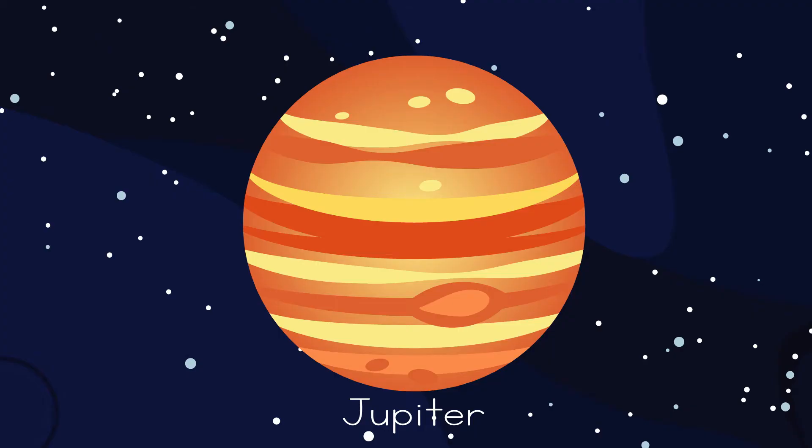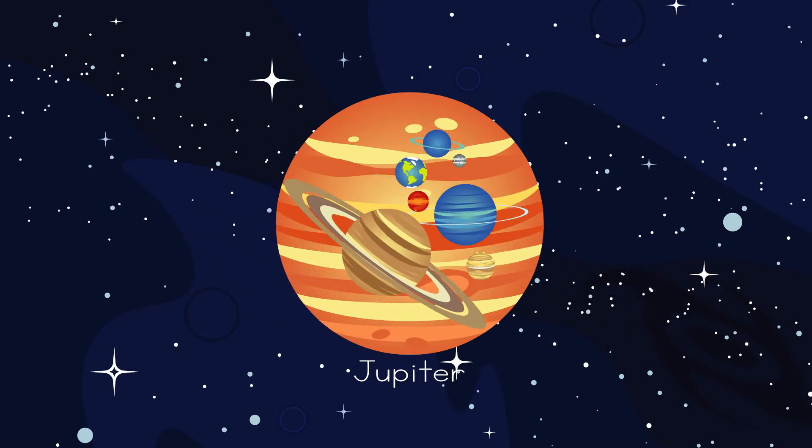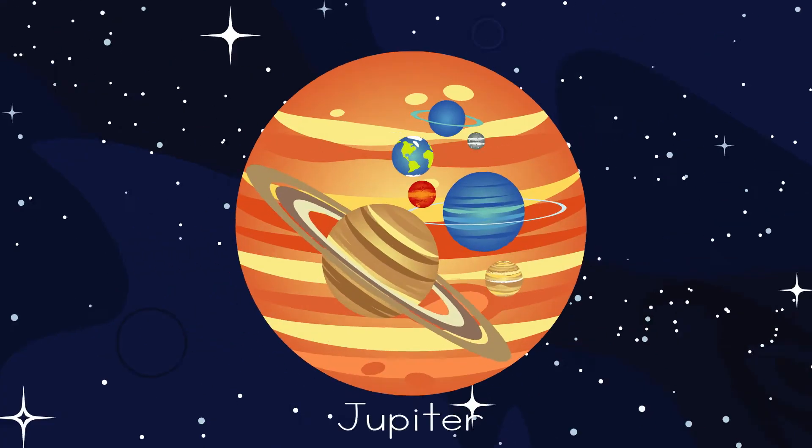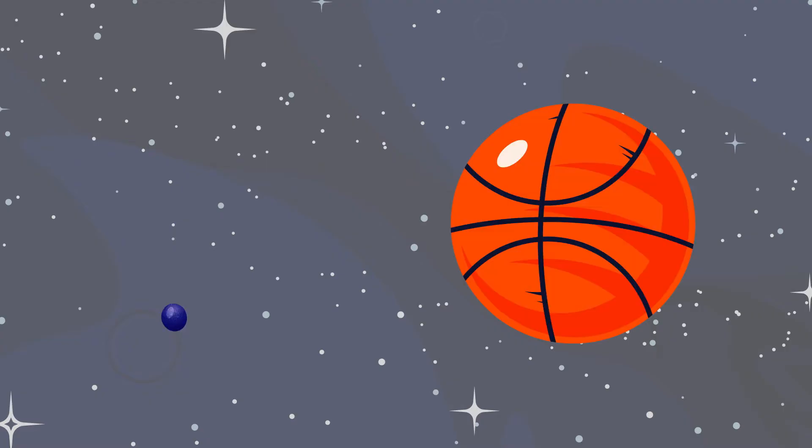Let's continue with the fifth planet from the sun, Jupiter. Jupiter is the largest planet in our solar system. It's twice as massive as all the other planets in our solar system combined. Eleven Earths could fit across the equator of Jupiter. Jupiter is huge! Or another way to think about it is if we imagine the sun is the size of a basketball, Jupiter would be the size of a grape, but Earth would be the size of a grain of sand.